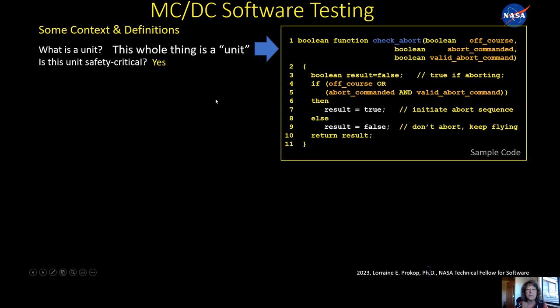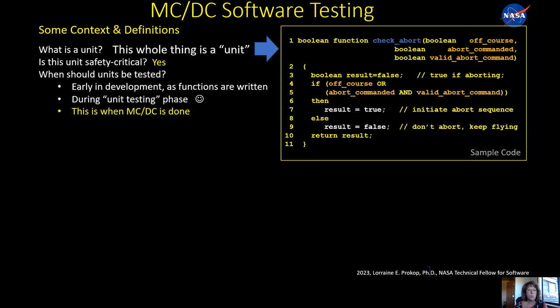Okay, the first question you ask is: is this safety critical? Because that's really where the MCDC is required. Although I'd say, why not do it for all of your code? Even if it's not safety critical, it's sort of the right thing to do. But is this safety critical? Yes. So when is this usually tested? You test these units as you write them in general to make sure that they work. So we call that unit testing. And this is exactly when MCDC is done.